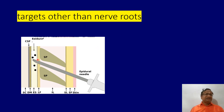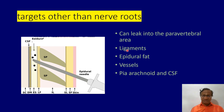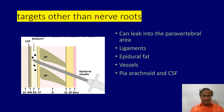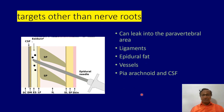Now, there are targets other than nerve roots. The drug can go into CSF, it can go into the blood, it can leak into the paravertebral area, it can sit in the ligament, sit in the epidural fat, or go into the vessels. So what we routinely say is there are three targets: the nerve roots — which we want — the fat, and the vessels.